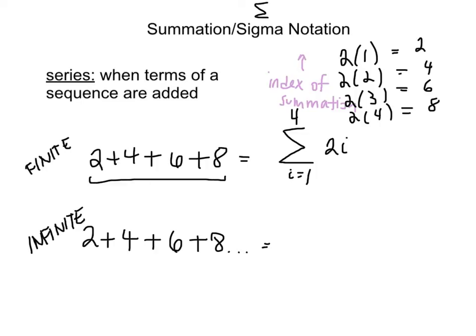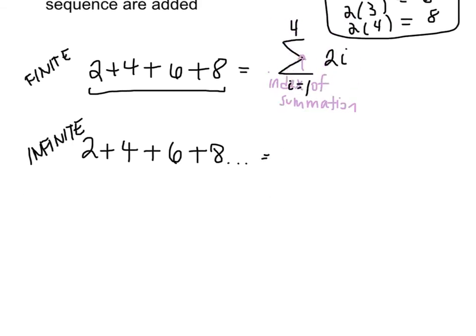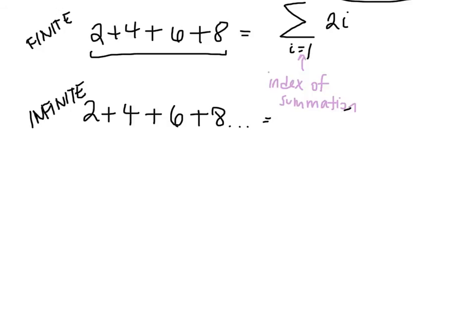Now, sigma notation is helpful. Instead of having to write out this entire thing, this is why we have sigma notation. You can see this in our infinite example when we have our sigma notation in which our upper limit is infinity this time because we have an infinite series. Our index is going to be 1 again, and we have 2i.